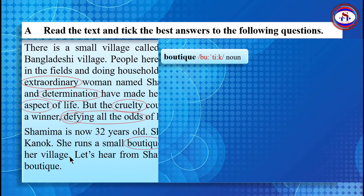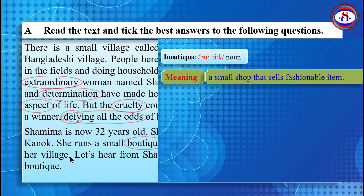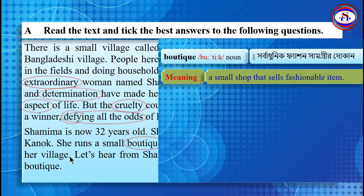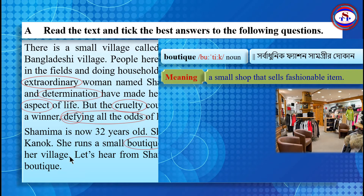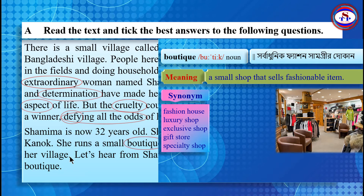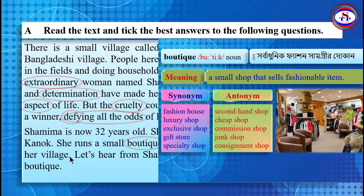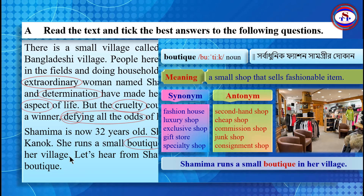The word 'boutique' is a noun. That means a small shop that sells fashionable items. Here you can see in the picture a small shop that sells fashionable items. The synonyms of boutique are: Fashion House, Luxury Shop, Exclusive Shop, Gift Store, and Specialty Shop. The antonyms of boutique are: Second Hand Shop, Cheap Shop, Commission Shop, Junk Shop, and Consignment Shop. Look at the example: Shamima runs a small boutique in her village.